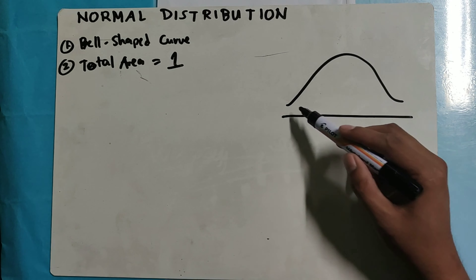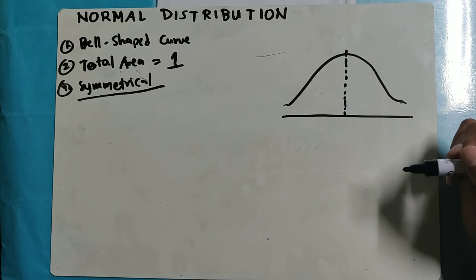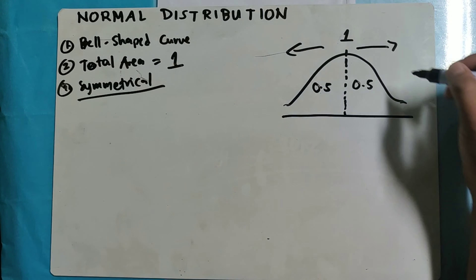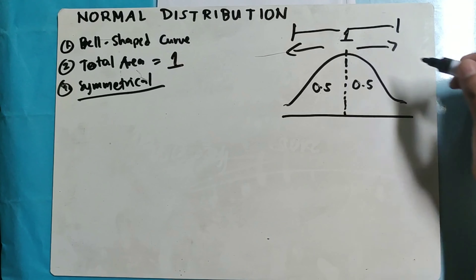Second, the total area is 1. Meaning to say, all of this area underneath this bell-shaped curve — all of it, including everything here, out here, in the tails — the total area is 1. The second thing to remember: the total area underneath the normal curve is 1.